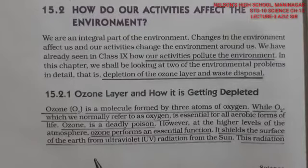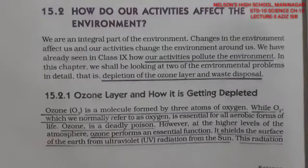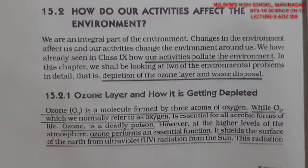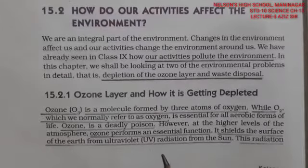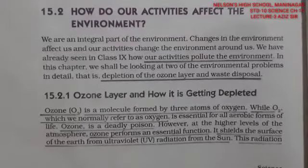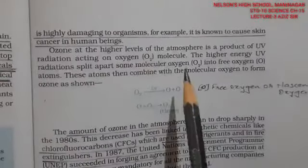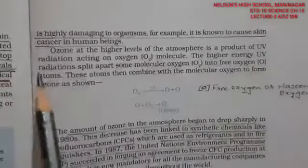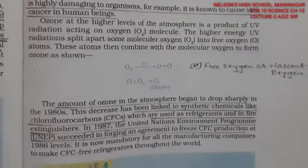Ozone shields the surface of the earth from ultraviolet radiation from the sun. UV — ultraviolet radiation — is one of many wavelengths coming from the sun. This ultraviolet radiation is stopped by ozone and not allowed to reach the earth's surface. Ozone is like a shield. UV radiation is highly damaging to organisms — for example, it causes skin cancer in human beings.